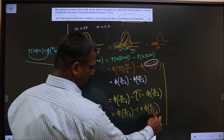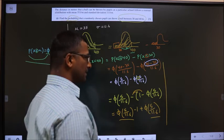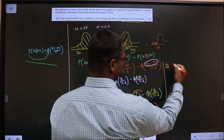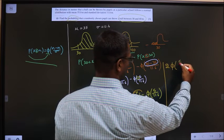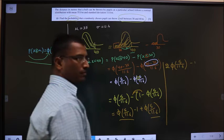Now, you see here this one and this one are same. So, that will result in 2 times. 2 times of phi of 5 by 11.6 minus 1. Clear?